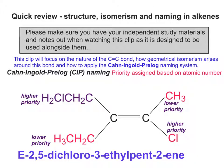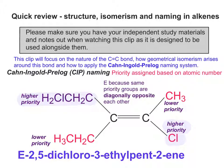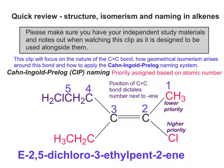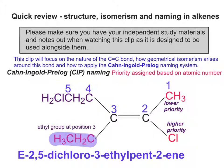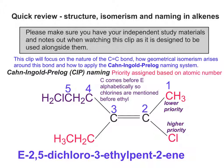It's the E isomer because the same priority groups are diagonally opposite each other. The position of the carbon-carbon double bond dictates the number next to the 'ene' part of the name — hence 2-ene. It's a pentene because there are five carbon atoms in the longest carbon chain. There's a chlorine atom at positions 2 and 5, and an ethyl group at position 3. C comes before E alphabetically, so chloro is mentioned before ethyl in the name.